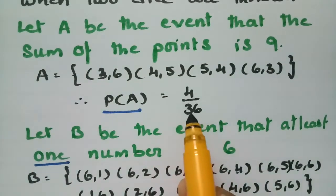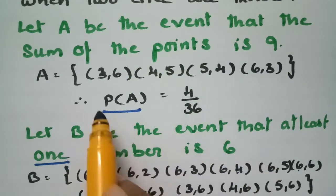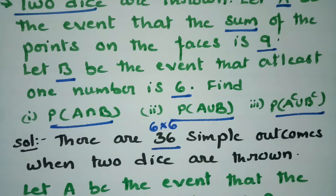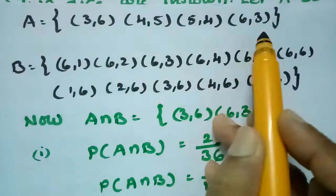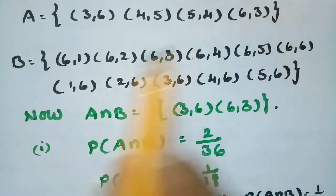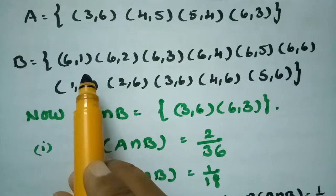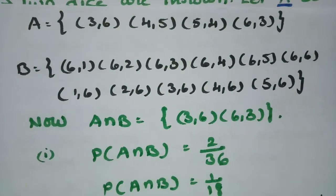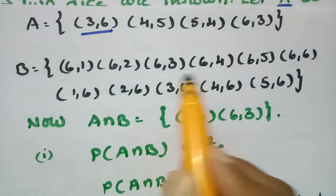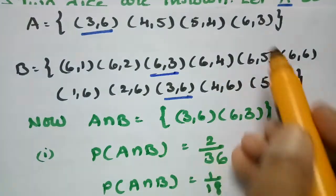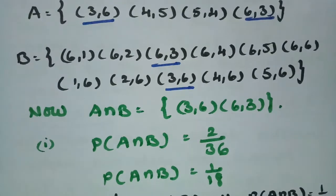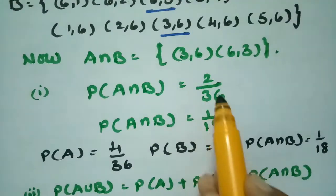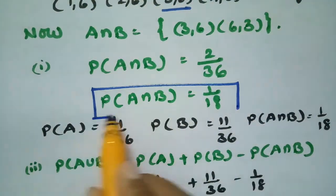P(A) = 4/36 and P(B) = 11/36 are ready. Next we find P(A intersection B), P(A union B), and P(A complement union B complement). A intersection B means the common elements: comparing set A and set B, the common points are (3,6) and (6,3). The pairs (4,5) and (5,4) are not in B. So A intersection B = {(3,6), (6,3)}, giving 2 chances, that is 2 by 36 = 1 by 18.